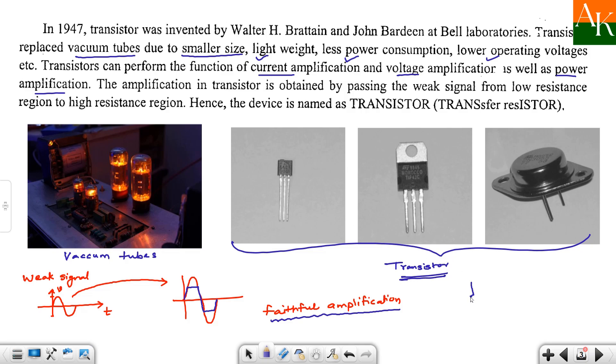At the input side you pass the signal through a low resistance and at the output side then transistor will have higher resistance RO. So, there is a transfer of resistor in the amplification of this weak signal. Hence, transfer of resistor, so here the transfer resistor, so trans unho ne idha se le liya aur idha se istor le liya and they have named as transistor. So ye hoke transistor ka basic advantage and what is the purpose of the transistor.